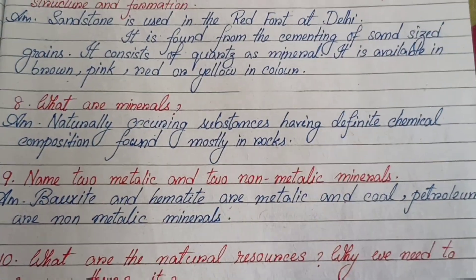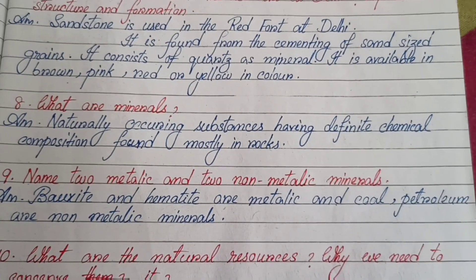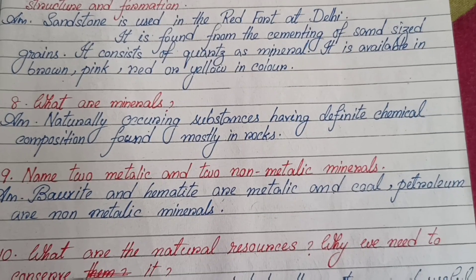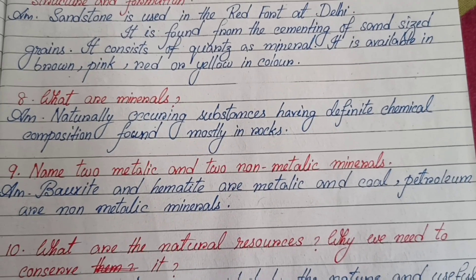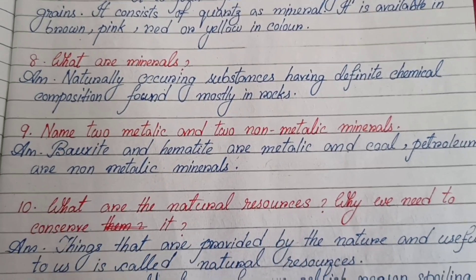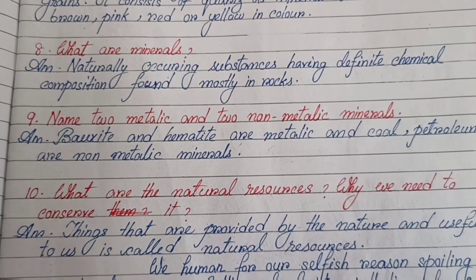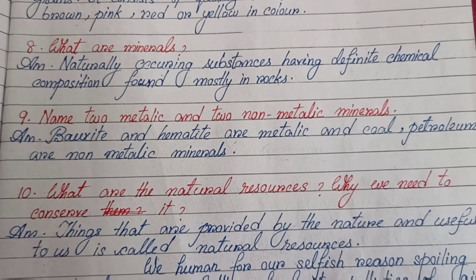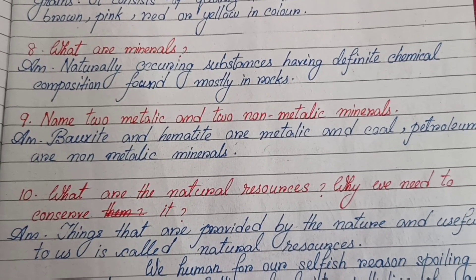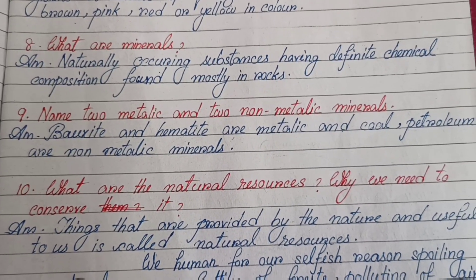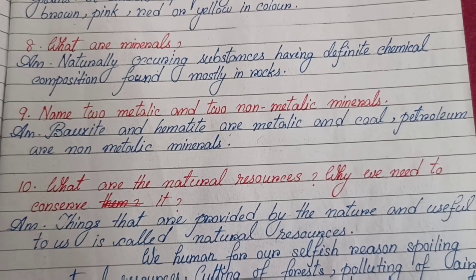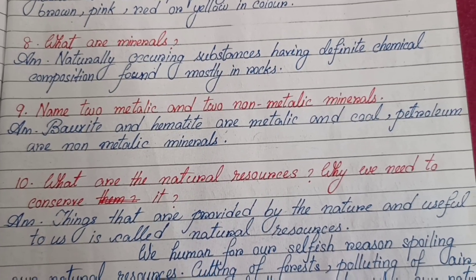Number eight: What are minerals? Minerals are naturally occurring substances having a definite chemical composition, found mostly in rocks. Number nine: Name two metallic and two non-metallic minerals. Bauxite and hematite are metallic minerals, and coal and petroleum are non-metallic minerals.